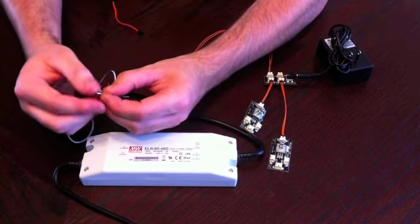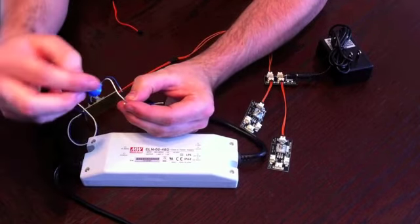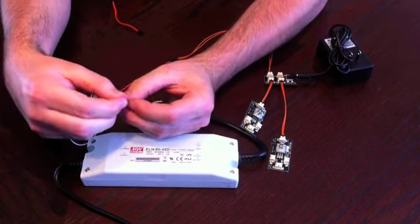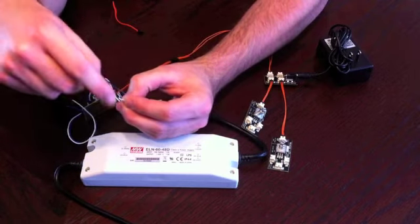So blue to blue, white to white. And you want to use your weatherproof connector to connect those together. This will just keep it water tight, preventing short circuits.